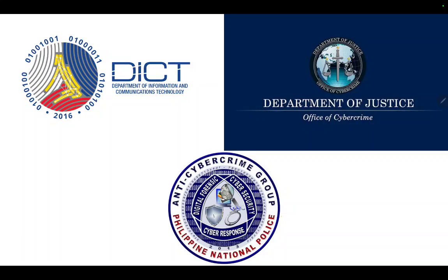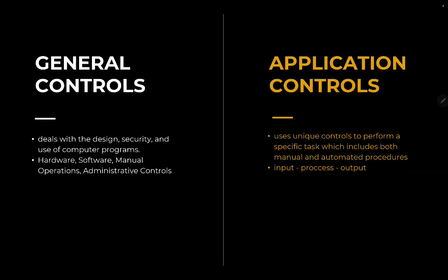Now let us differentiate general controls and application controls. General controls are built through the design, security, and use of computer programs — technically, the hardware, software, manual operations, and administrative controls of the whole information system. These include tablets, computers, mobile phones, and software we use like Microsoft Office Word, Excel, manual operations like barcode scanning, QR code scanning, voice recording, and video recording.